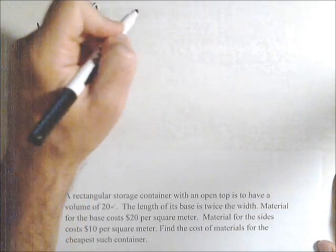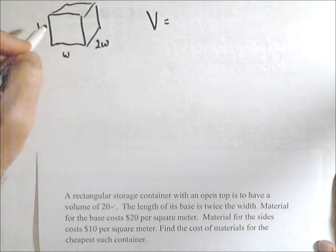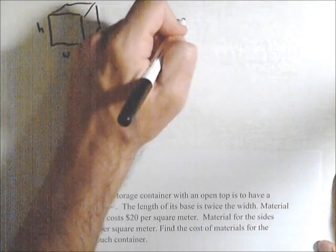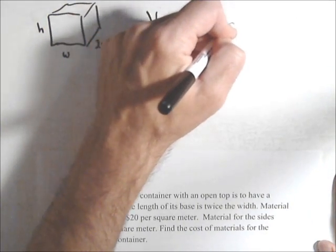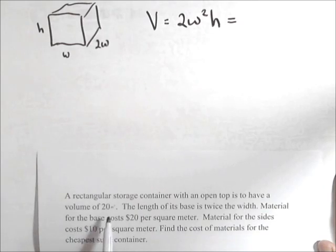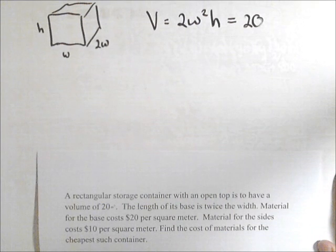Right off the bat, if I want to write up the volume for this guy, I'm going to have length times width times height. So 2w squared times h. I'm just going to multiply those dimensions together. And we know that the volume has to be 20 meters cubed. There's our constraint equation.